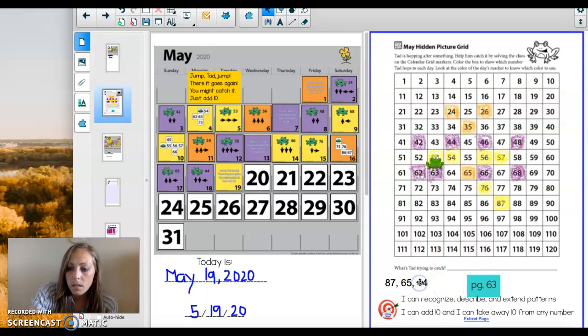Let's write it the short way. It's the fifth month of the year, it's the 19th day of the month, and it's 2020. All right, friends, so yesterday Tad landed on 63 and today we have a new clue.